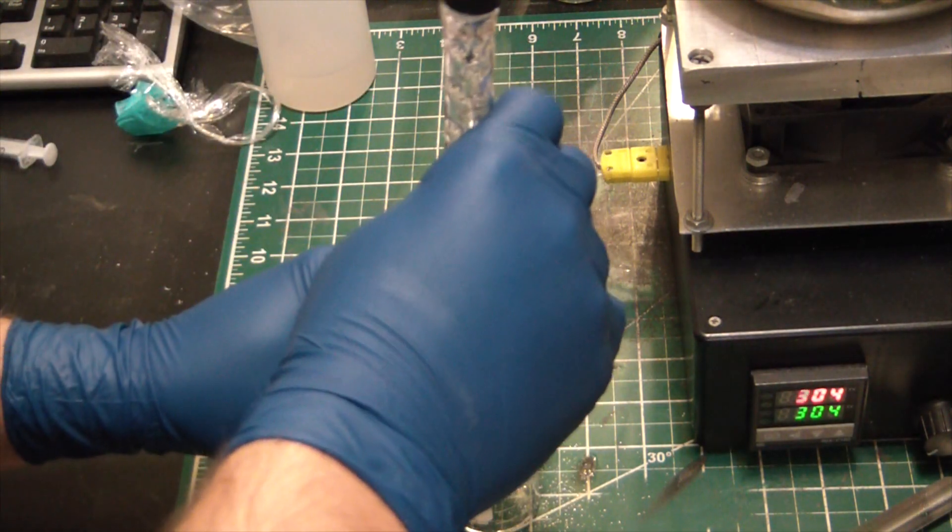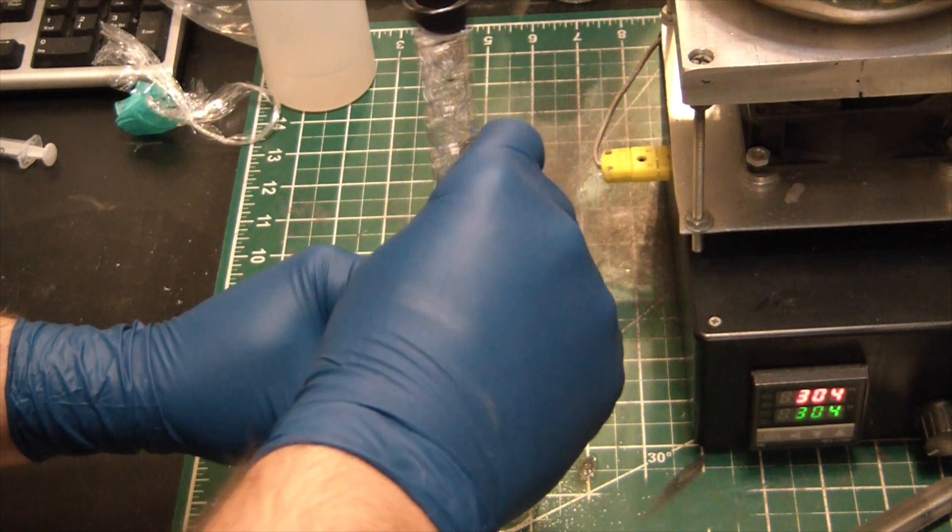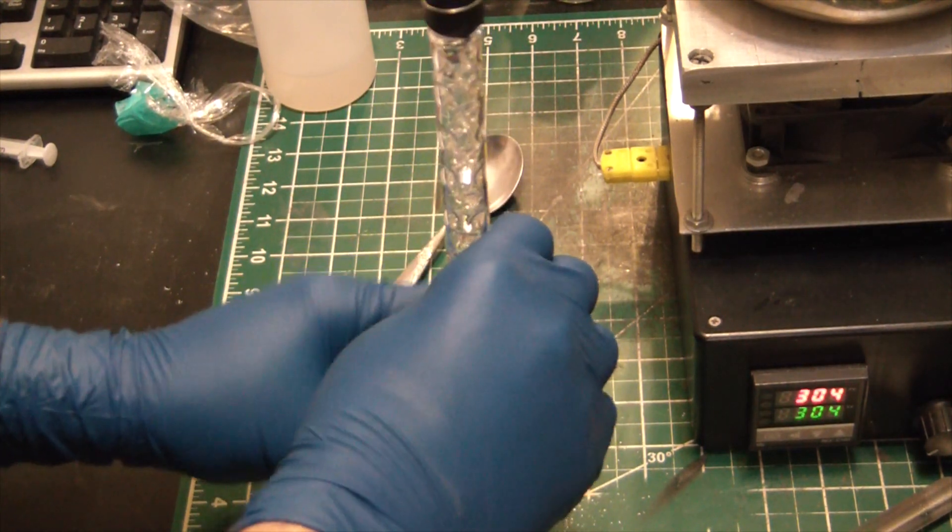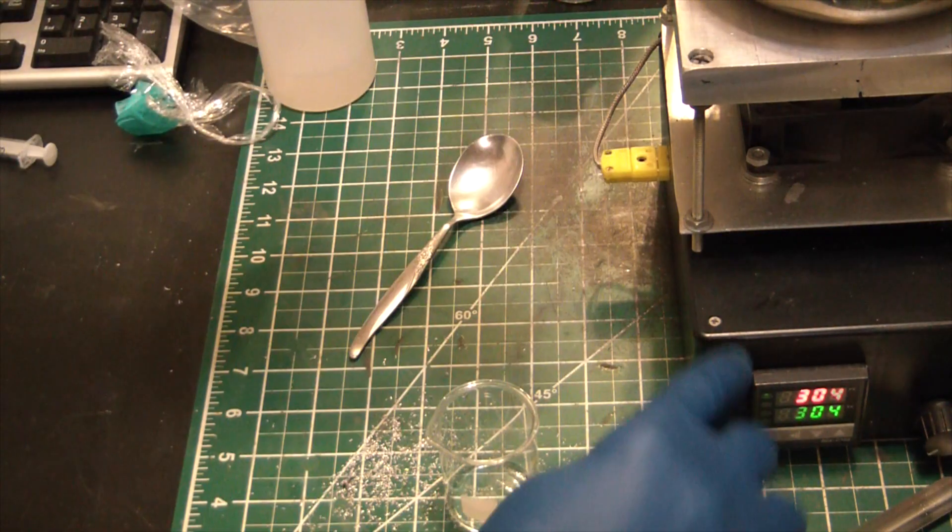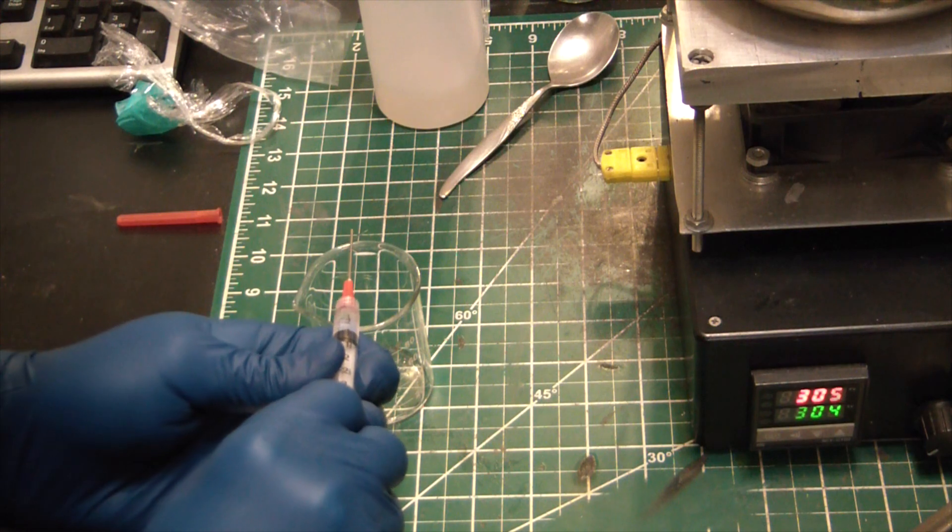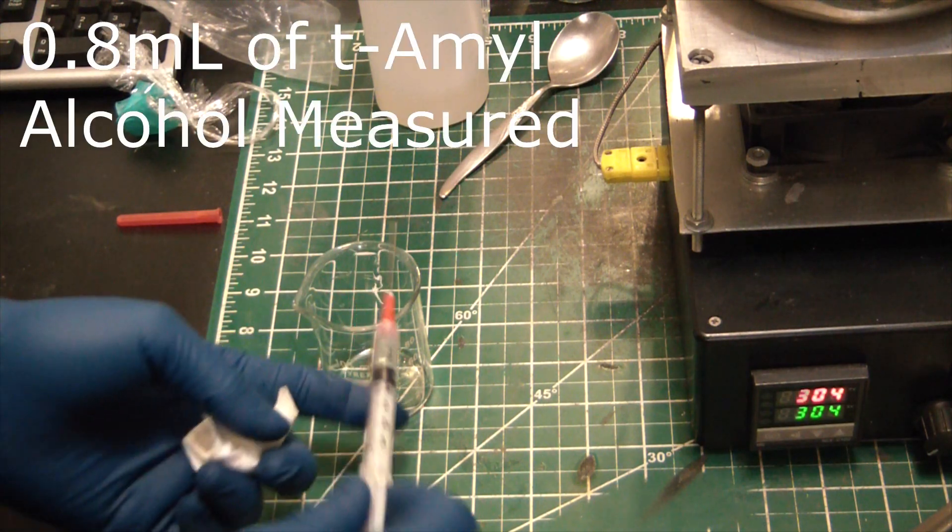Alright, and now we can seal this sucker off. Give it a good turn to lock everything in place and get it on the heat. So I have my hot plate set to just over 300.